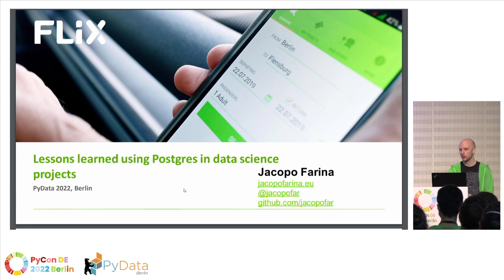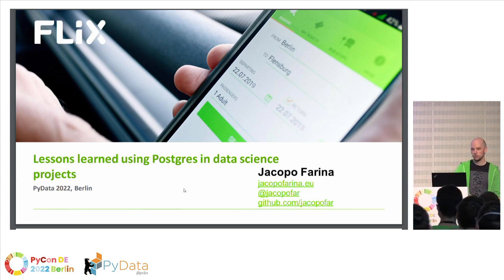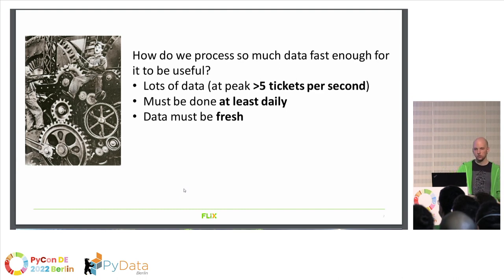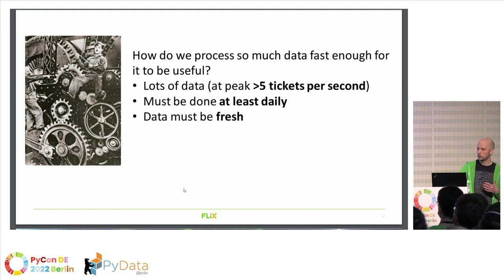My name is Jacopo and I work at Flixplus in Berlin, for about four years now. Today I'm going to talk about some lessons we learned about using Postgres — or in general any relational database — in a data science project that is in production. By production, I mean we have to process a lot of data. To give you an idea, in peak periods, not during COVID but now and before, we have up to five tickets sold per second. We have to process this data at least every day, and it must be fresh, so we have to be sure we do not see stale data, otherwise our results are wrong.